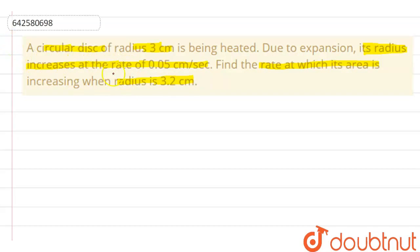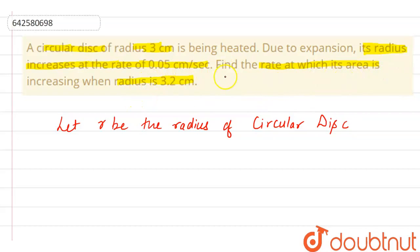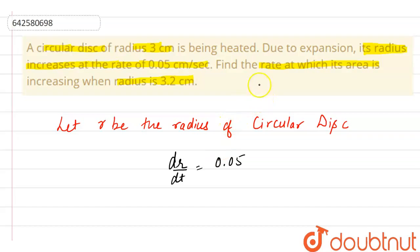So here in this question, we are having a circular disk of radius 3 cm. And as the question says, due to expansion, its radius increases at the rate of 0.05 cm per second. Let R be the radius of this circular disk. This means we are having dr/dt equals to 0.05 cm per second.